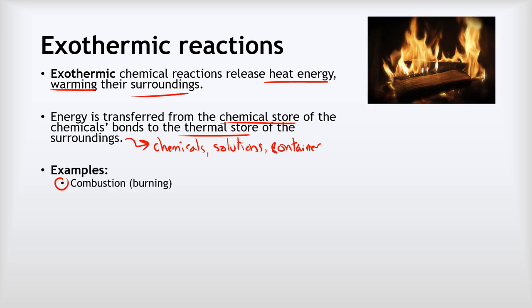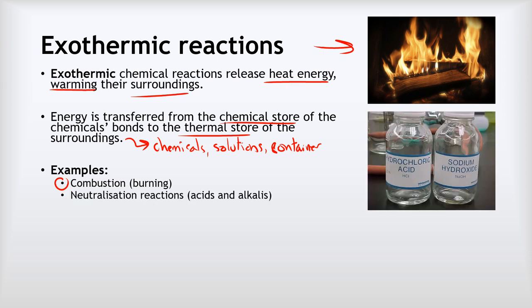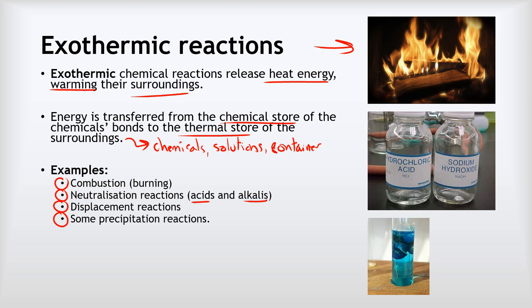Examples of exothermic reactions include combustion — this is our most common example. Any kind of burning reaction is exothermic, whether it's a bonfire, a log fire to warm a house, or a gas flame warming your boiler at home. The next one is neutralization reactions between acids and alkalis — these are always exothermic. Displacement reactions, where a more reactive element displaces a less reactive element from a compound, are also always exothermic. Some precipitation reactions are exothermic — those are reactions where mixing two solutions produces an insoluble product. But dissolving some salts is also exothermic; some are endothermic, but a lot are also exothermic.